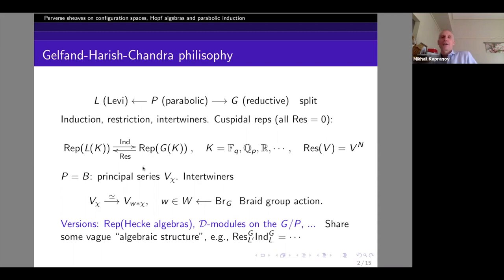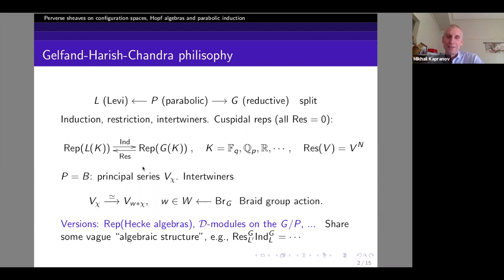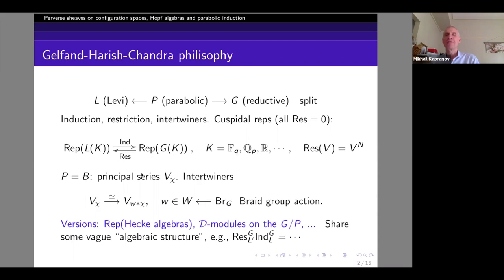This is a paradigm in representation theory for many years and is still ongoing. Suppose we have a reductive group with a parabolic subgroup that projects onto the Levi. In this case we can induce and restrict representations over many fields. There are three components in this game: induction, restriction, and the intertwiners. The intertwiners are most easily described for the Borel subgroup — it's a classical principal series representation corresponding to a character of the torus. The intertwiners identify a representation given by a character and one given by a character twisted by an element of the Weyl group. It's not really the Weyl group but the corresponding braid group which is acting.